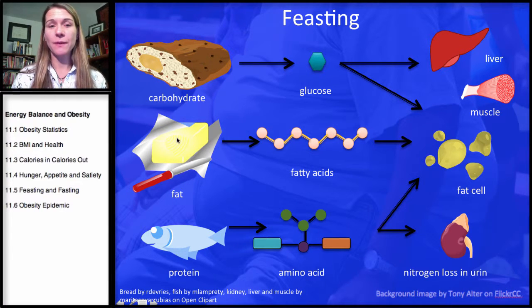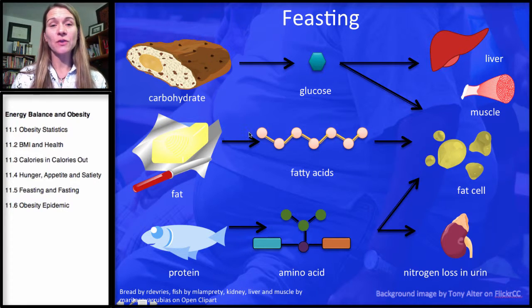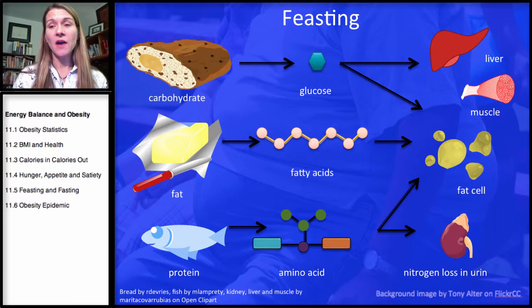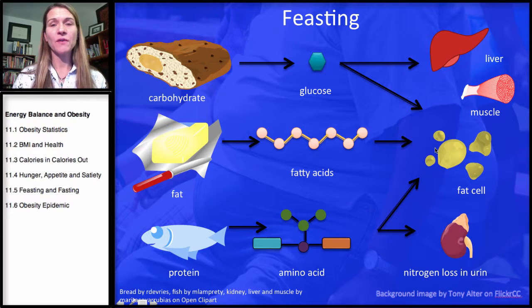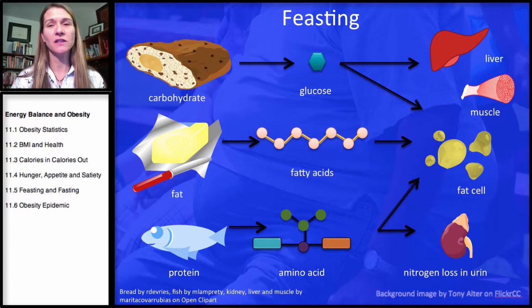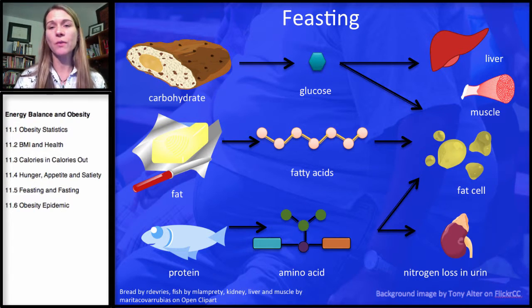Fat — I happen to have an example of butter here; this is a saturated fat. When fat is consumed, it's broken down into fatty acids and basically goes directly to the fat cells to be stored. When we need fat for energy, we go to the fat cells. We used to think of fat cells as more of a savings account, but it's more like a checking account — we're constantly putting fat in and drawing fat out. It's a constant turnover process.